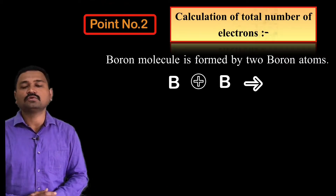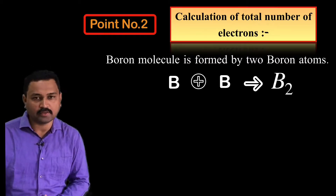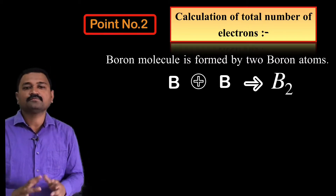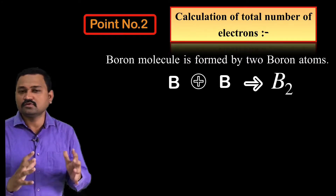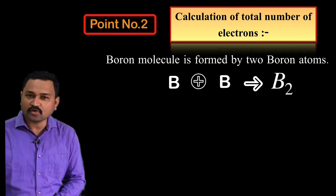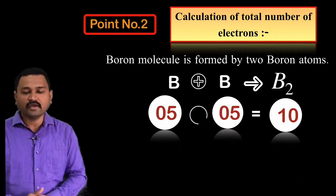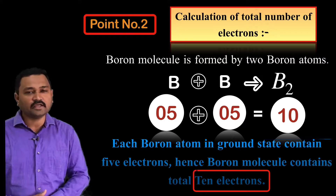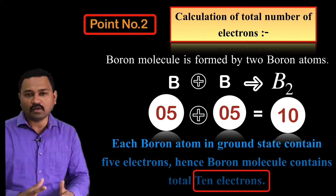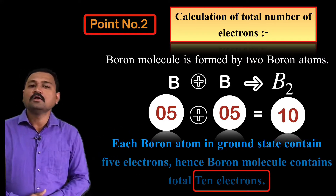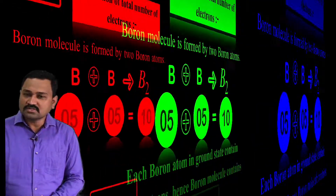Point number two: the calculation of total electrons in the boron molecule. Since the boron molecule is made up of two boron atoms and each boron atom contains five electrons, there will be a total of 10 electrons in the boron molecule. This is our point number two.